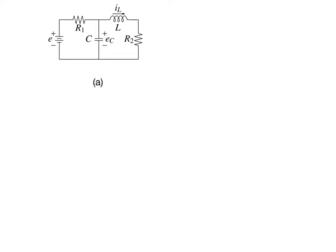In an electric circuit, the first thing we want to do is identify our distinct potentials or voltages. These can be found anywhere there is a junction or between elements. So here at the bottom, for sake of simplicity, we can assume that this is our explicit ground.